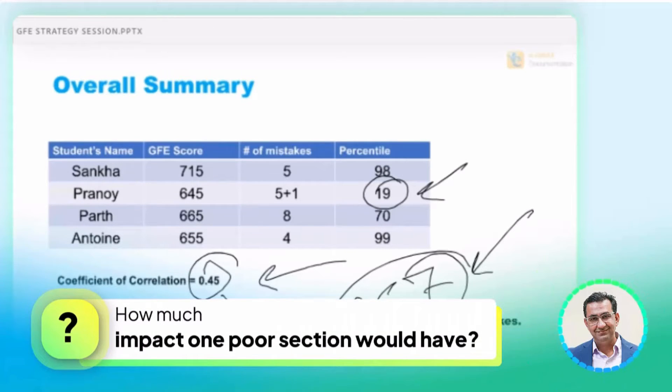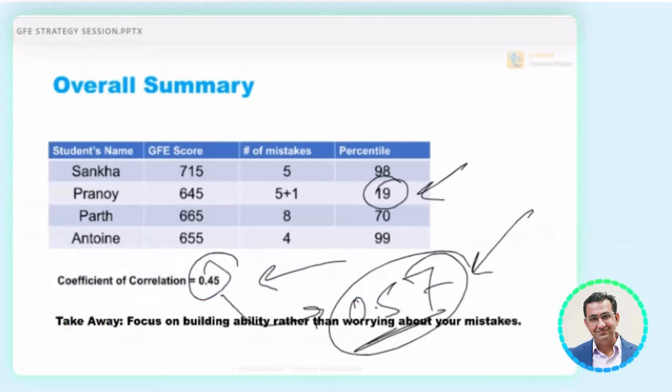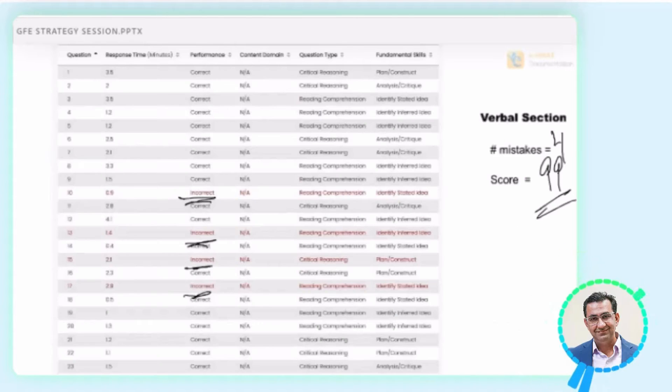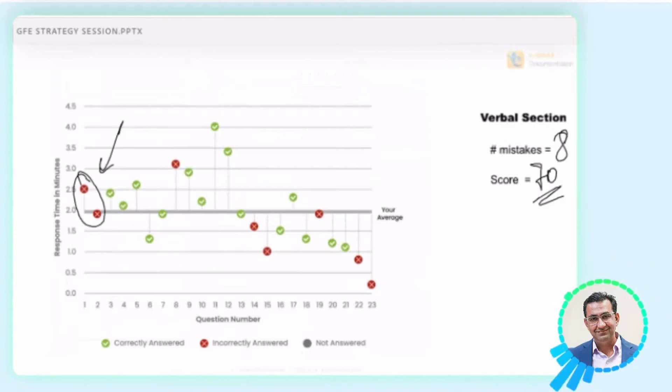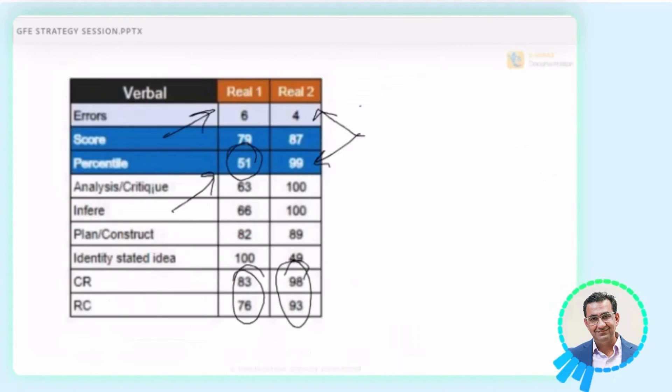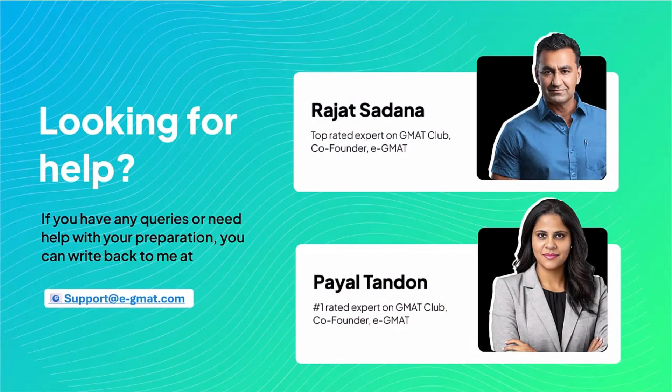How much impact one poor section would have on the other sections? Slight amount, if at all. So what happens if you have a poor section is that you start with easier questions on the next section. Now, if you don't make a mistake in those questions, it has absolutely zero impact. But if you start with an easy question and then you make a mistake, then of course, you know, how the GMAT works for easy questions is something that you guys know by now. Then it has a negative impact here, which is where I would rather be in this position here where I'm starting with more challenging questions. And even if I get those questions wrong and I would get a 70th percentile, because that is an honest evaluation of my ability.